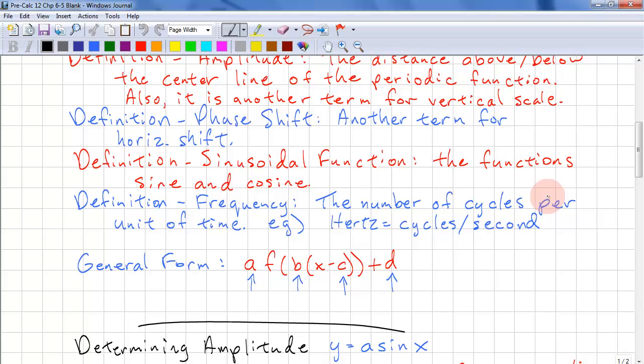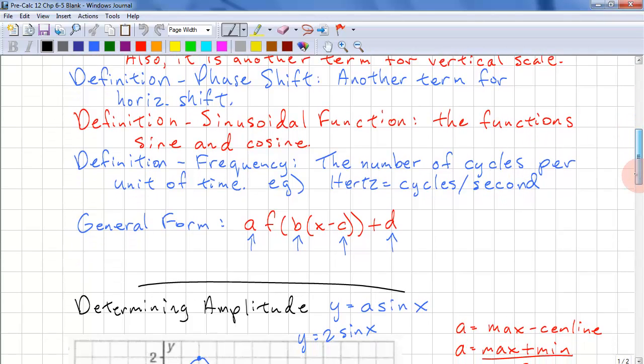Our next definition is frequency. This is the number of cycles per unit of time, usually per second. Hertz is the number of cycles per second. For audible sound, we can go as low as 20 hertz and up to 20,000 hertz. As you get older, you won't be able to hear the higher frequencies as well.